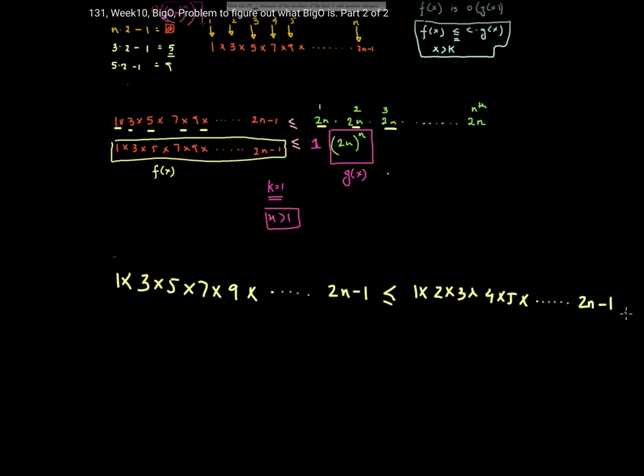Okay so what I do know from here is that this multiplication on the right is going to be greater or equal to the term on the left. So if this term over here is f(x) and this is my g(x), then I know that I can take some constant and multiply this with g(x).